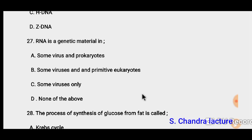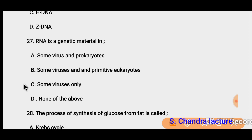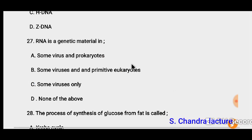Question 27: RNA is a genetic material. This is a bit confusing but a very simple question. When you study viruses like HIV, you see that RNA is the genetic material in some viruses. So here the correct option must be 'some viruses only' — not in prokaryotes, not in primitive eukaryotes.